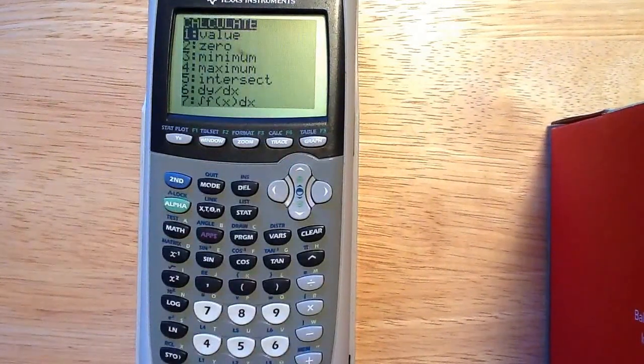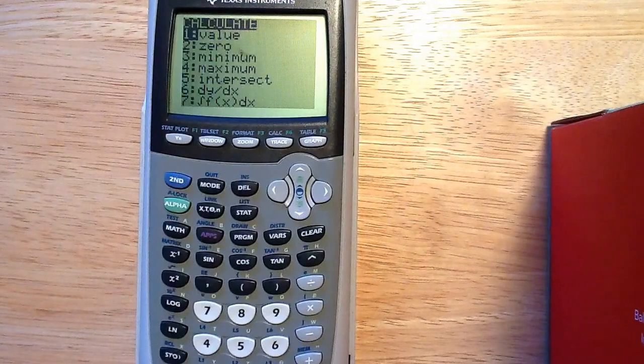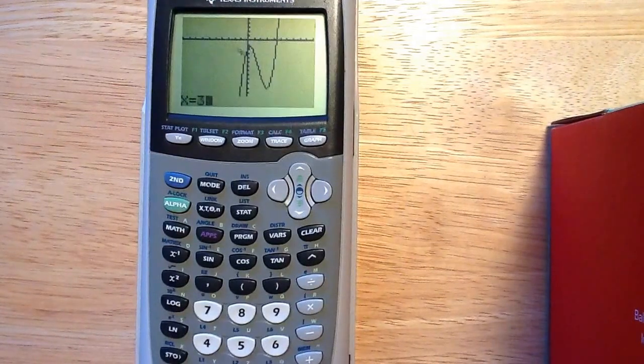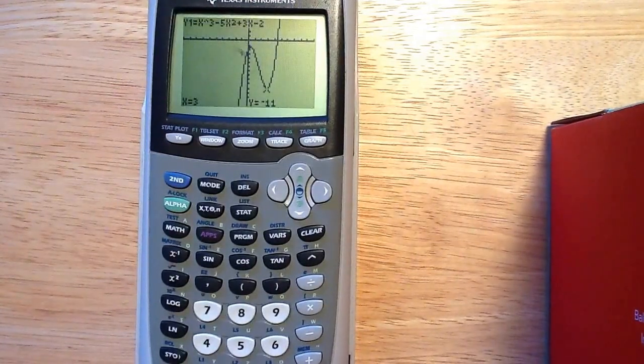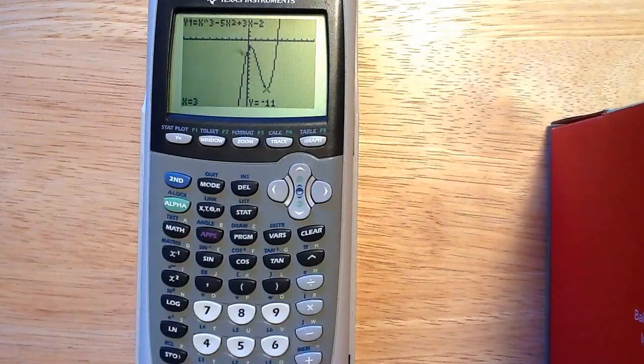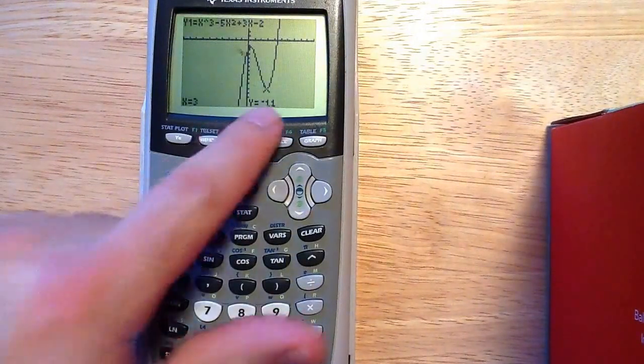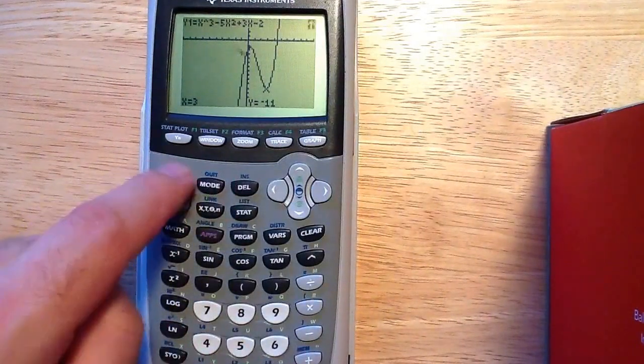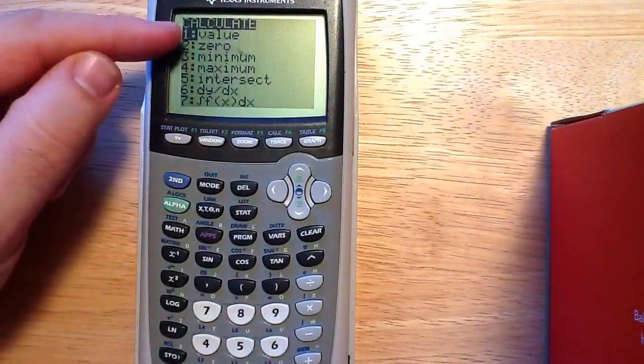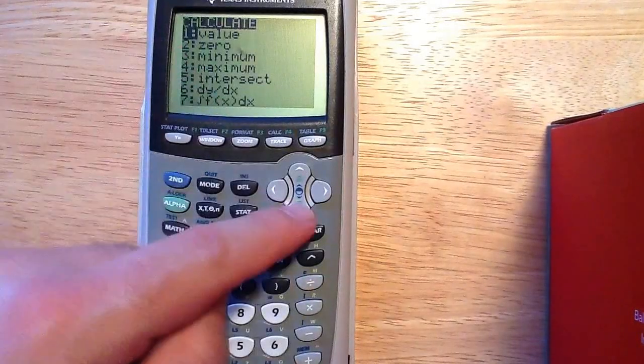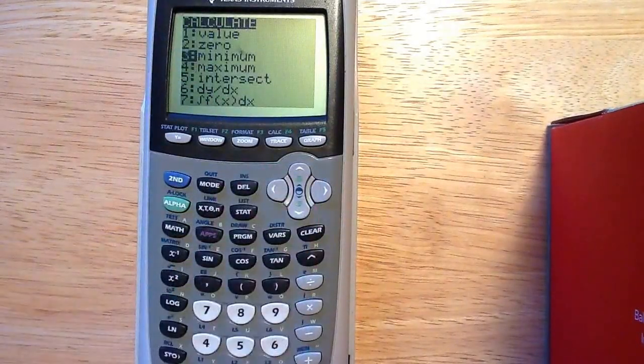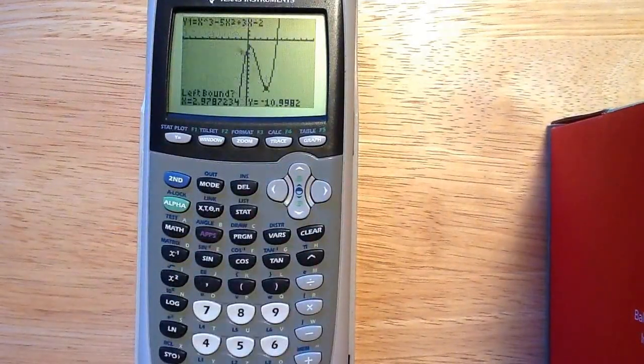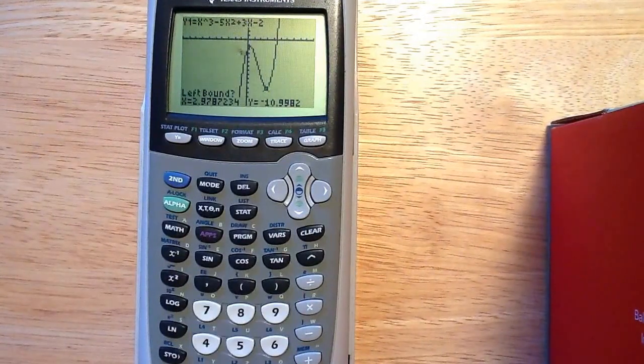Basically if I wanted to find out what the value was at a certain point, I can just type in 3, and at 3, boy did I just nail the minimum I think I might have. At 3 it's negative 11. So let's go back into the calculate menu and find out if x equals 3 is the minimum. Okay, it looks like it might be.